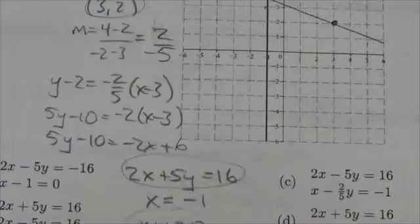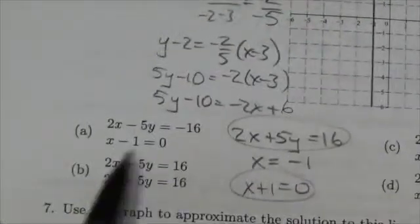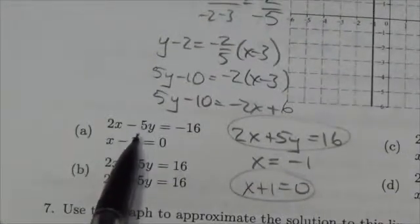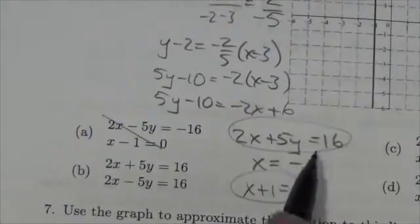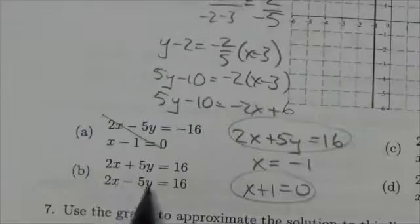So I'm looking for that equation and this one right here, so let's take a quick look. 2x minus, nah, not that one. 2x plus 5y equals 16, ooh, that's good. X, nah, that's not that one, not the second one here.